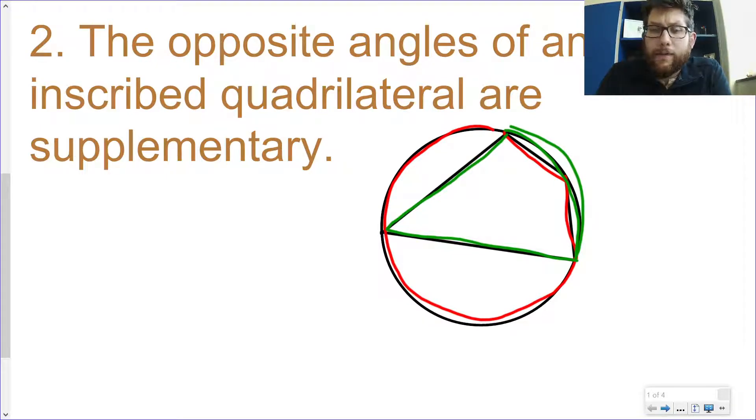Notice what happens with the red arc and the green arc. Together it's 360 degrees. And no matter how I split that up, it's always going to be 360 degrees as long as the two endpoints end up on the circle, as long as the quadrilateral is inscribed. So half of the green plus half of the red will always add up to be 180.